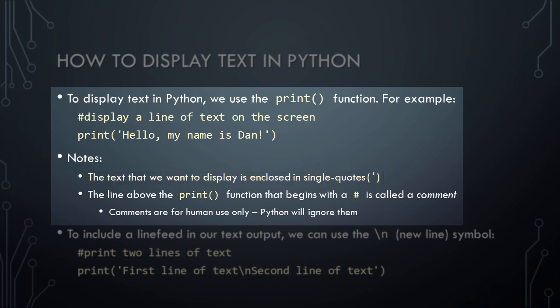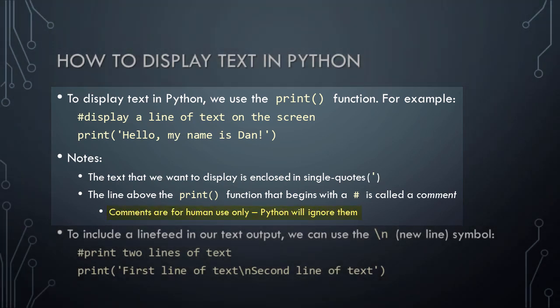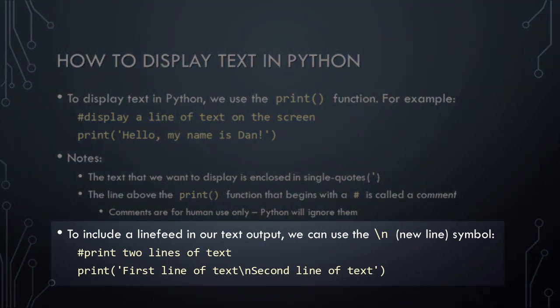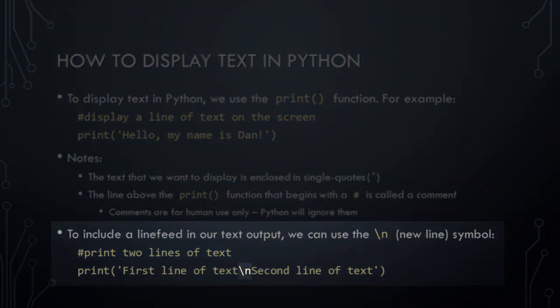Note in this example that there is a line above the print function that begins with a pound sign. This is called a comment. Comments are for human use only. They help us to remember what a section of code is intended to do, and can help other people understand our code more easily. Since comments are just for human use, Python will ignore them. If we want to include a line feed in our text output, we can use the forward slash n, or new line symbol, as shown here.